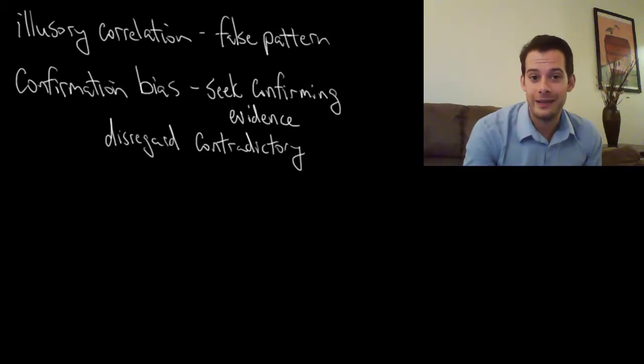This would be an example of an illusory correlation which becomes stronger based on confirmation bias. Now this is a silly example, a lucky shirt and exam performance, and you probably don't believe this sort of thing. But illusory correlations and confirmation bias become a lot more dangerous when we start making assumptions and seeing false patterns in people's behavior based on their gender or their race or some other trait. We can't trust our own minds to find correlations. Our minds are prone to error and bias so we need to have a better way of ensuring that a relationship is real.